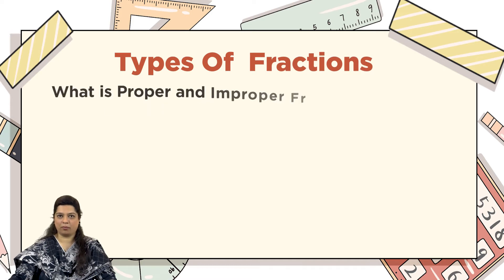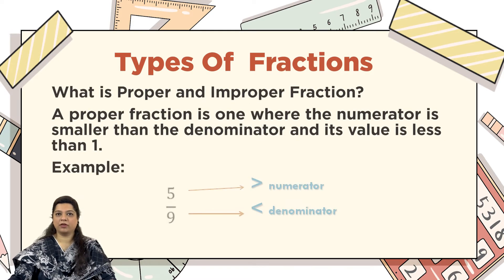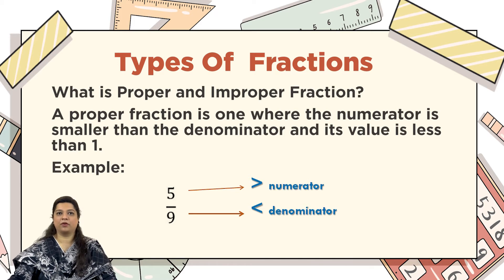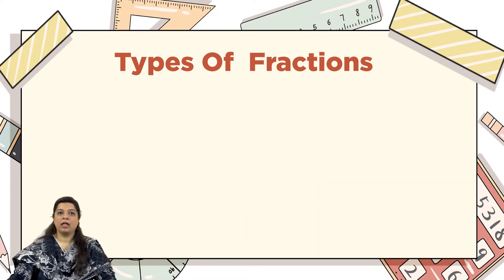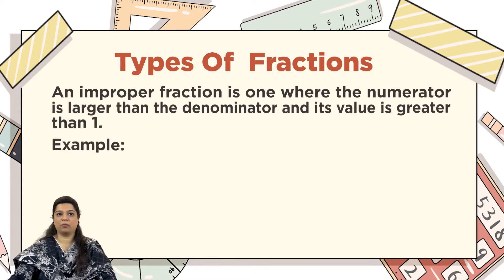We have two types: proper and improper fractions. A proper fraction is one where the numerator is smaller than the denominator and its value is less than 1. The example in front of you is 5 upon 9 — 5 is smaller and 9 is greater.